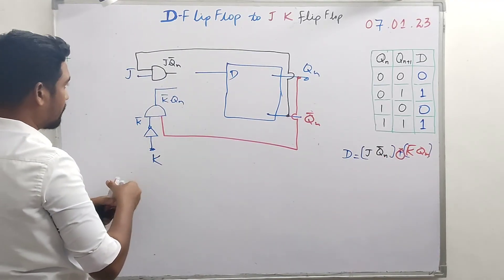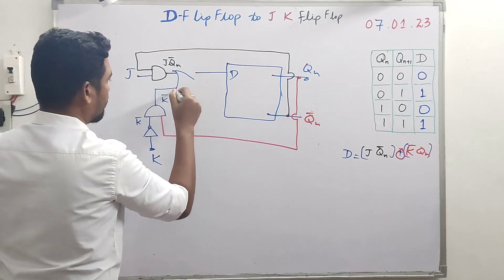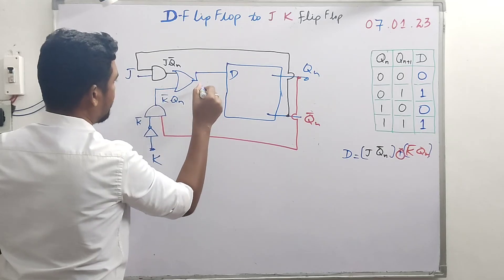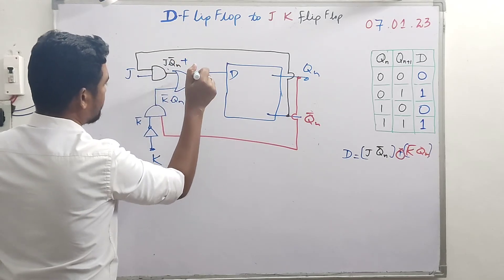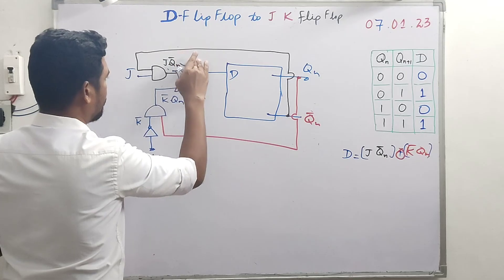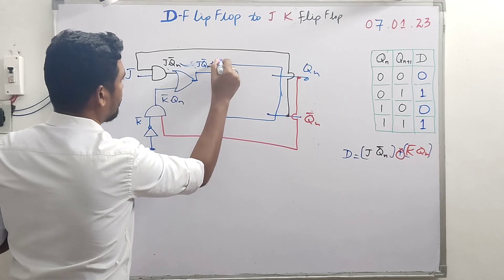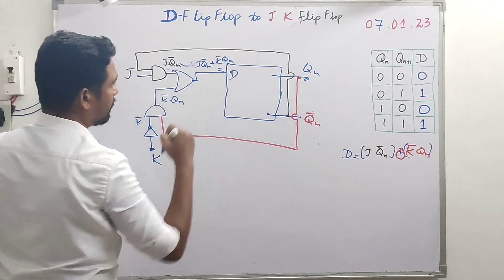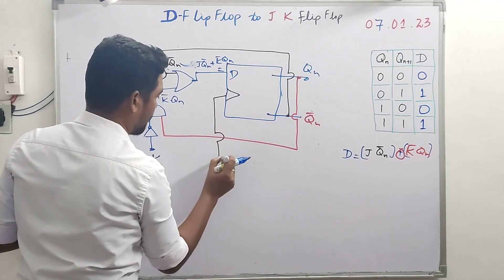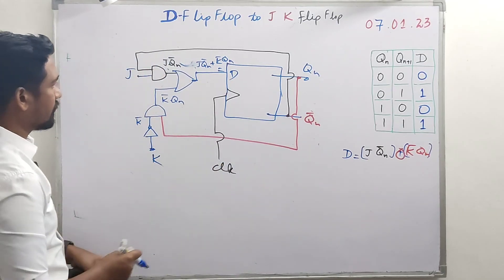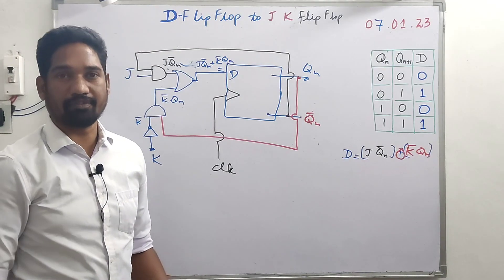The OR gate output gives J·QN-bar + K-bar·QN, which equals D — the required input to the D flip-flop. The clock pulse is also connected as usual. This completes the conversion of a D flip-flop to a JK flip-flop.